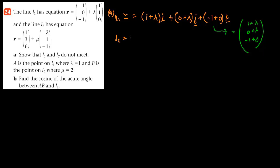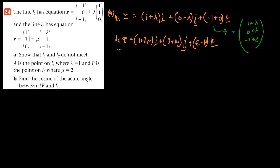L2 would be (1 + 2μ)i + (3 + μ)j + (6 − μ)k. The first thing we do is form equations by setting i equal to i, because if they intersect, they should be at the same position.